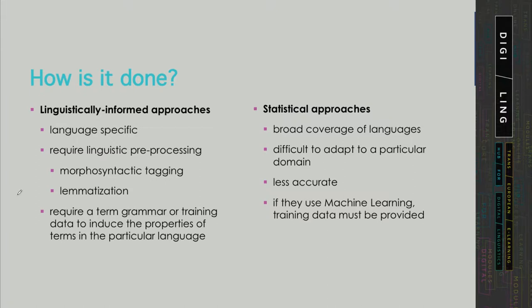Like for most language processing challenges, there are two main strands of approaches to term extraction: the first one using linguistic information, and the second one using pure statistics. And as we shall see later on, most state-of-the-art approaches employ both. For machine learning approaches, it is difficult to say whether they belong to the rule-based or to the statistical strand.